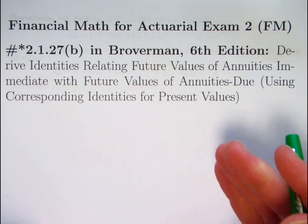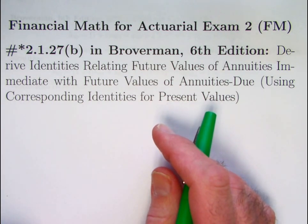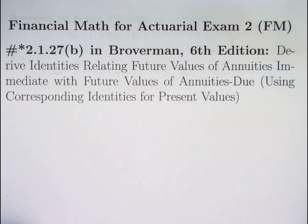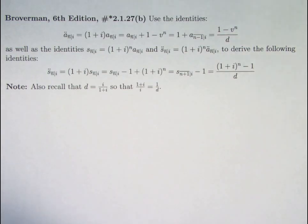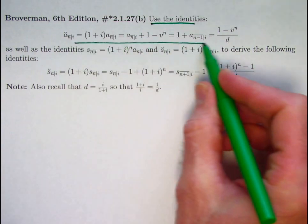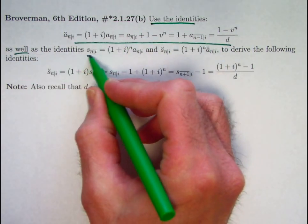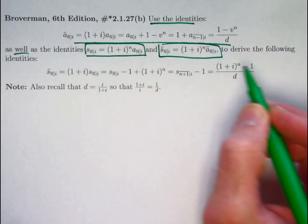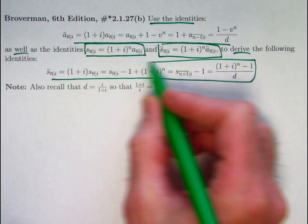We're going to be deriving identities relating future values of annuities immediate with future values of annuities due, using what we saw in the last video about corresponding identities for present values. I'm stating the question a bit differently in the book. I am trying to emphasize the use of these identities. These are identities for present values as well as some other identities which are supposed to be intuitive. We have talked about these kinds of identities before to derive the following identities related to future values.